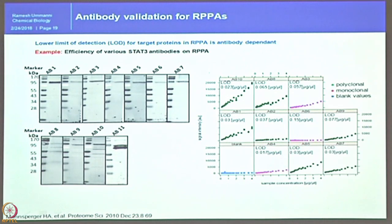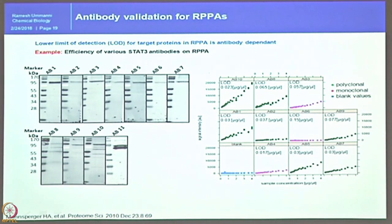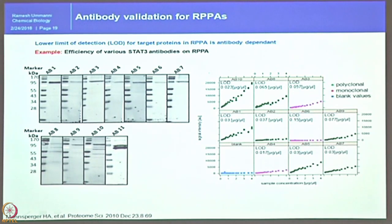Different STAT3 antibodies detecting STAT3 in the same sample produce different signals. The limit of detection (LOD) numbers differ among antibodies: the green polyclonal, red monoclonal, and blue blank values show signals on different scales along the y-axis. If a protein is very low in abundance, a more efficient antibody must be used. For highly abundant proteins this matters less, but for low-abundance proteins or phosphoproteins — where very few copies are phosphorylated — careful antibody selection is critical.